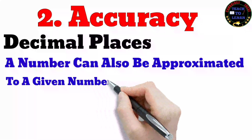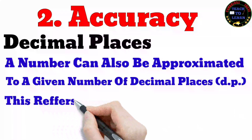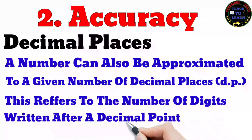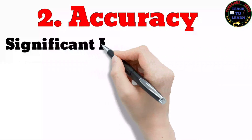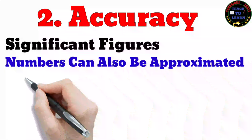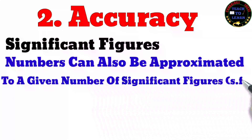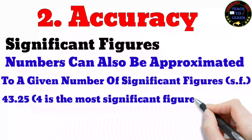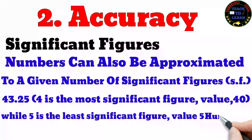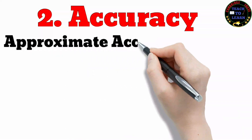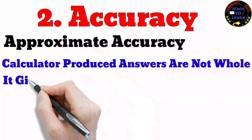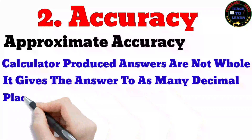Just like this, numbers are also rounded. Decimal places: a number can be approximated to a given number of decimal places, referring to the number of digits written after the decimal point. For example, 7.864 is written as 7.9 to one decimal place. Numbers can also be approximated to a given number of significant figures. In 43.25, the 4 is the most significant figure as it has the value of forty, while the 5 is the least significant as it only has the value of five hundredths.